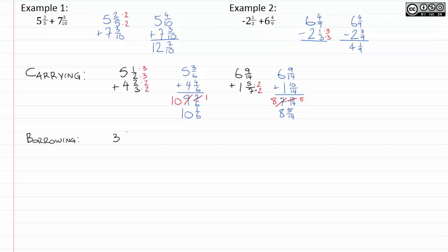Let's say we have 3 and 1 sixth minus 1 and 1 half. 3 and 1 sixth minus 1 and 1 half. Once again, I'm going to multiply the top and the bottom of this by 3. And so, here we'll get 3 and 1 sixth minus 1 and 3 over 6.